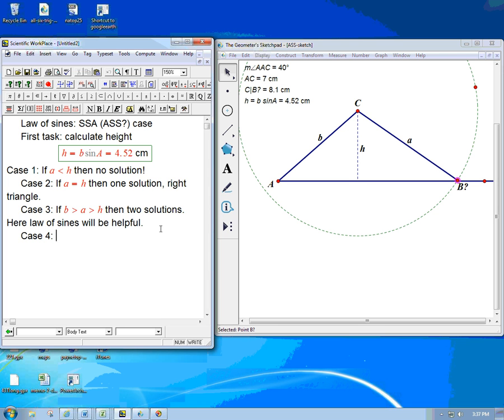Case four is what I've got displayed here. And this says if A is greater than B, then we're back to one solution. Law of sines is still helpful here. But it's case three that is the trickiest because we have to figure out how to get both those solutions. And that's easy to forget to do in the first place, and it's easy to miss exactly how to do it.